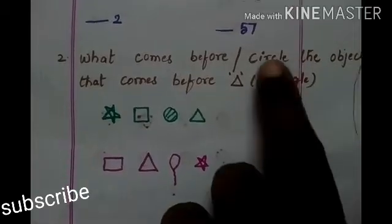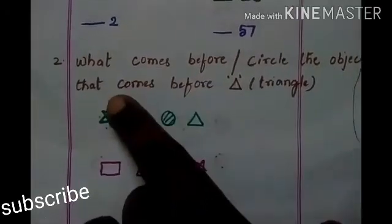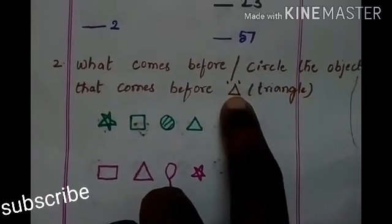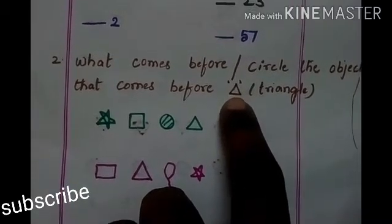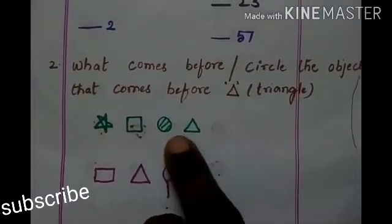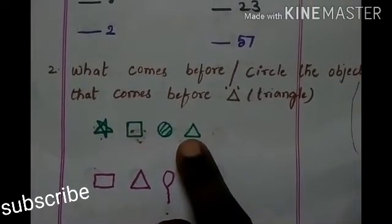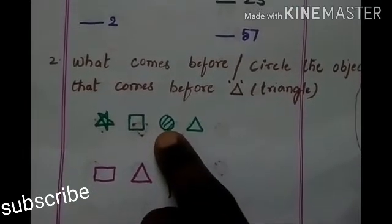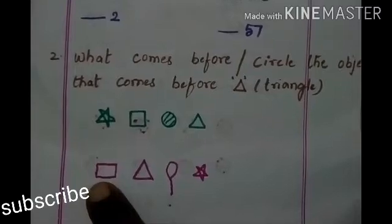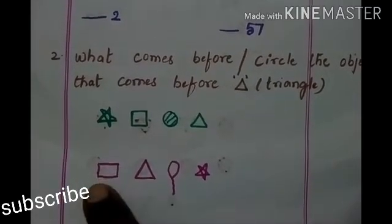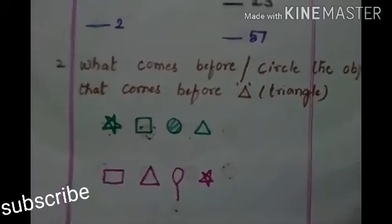What comes before R? Circle the object that comes before the square. Which shape comes before the triangle? We have to see. Here where is the triangle? This is the triangle, and what shape comes before the triangle? It is circle. Here in this, where is the triangle? This is the triangle — then what shape came here? It is rectangle.